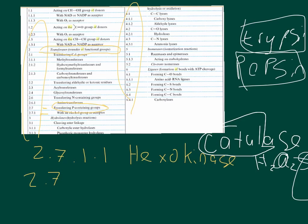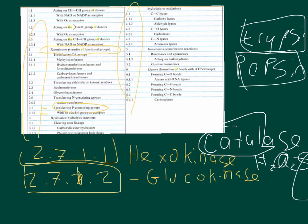Then you have 2.7.1.2, which is glucokinase. And that transfers a phosphate group to the number six carbon, the number six alcohol on a glucose ring. And so it's actually a very specific hexokinase, whereas hexokinase in general is nonspecific. It doesn't care exactly what kind of six-member ring it is.